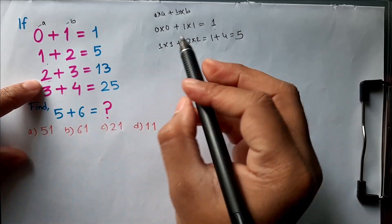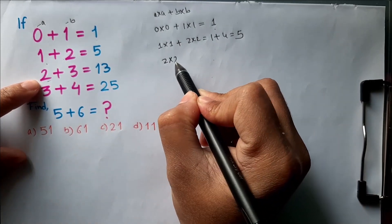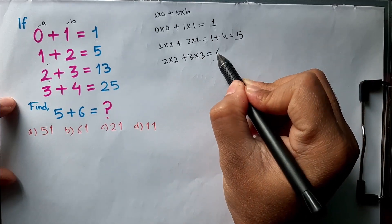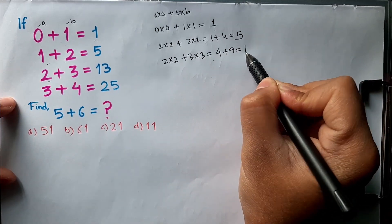Similarly we apply here: 2 × 2 + 3 × 3, we will get 4 + 9, that is 13.